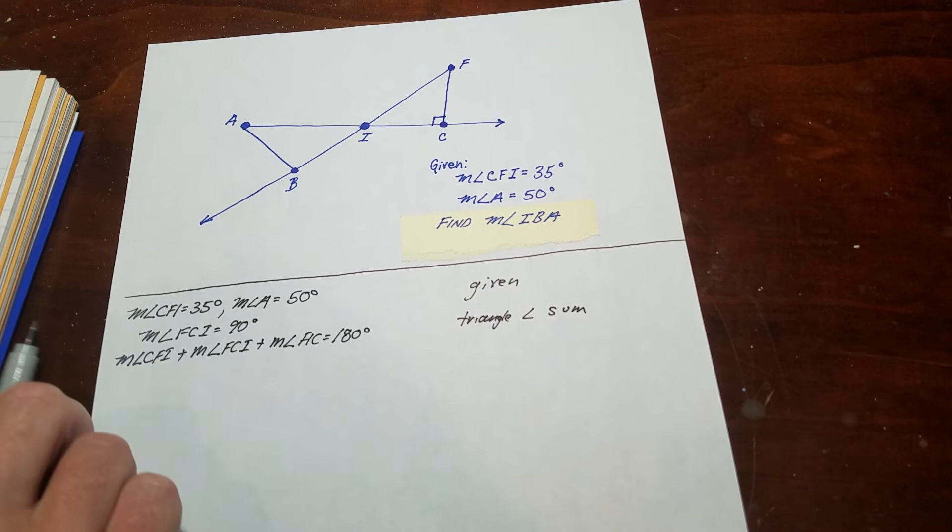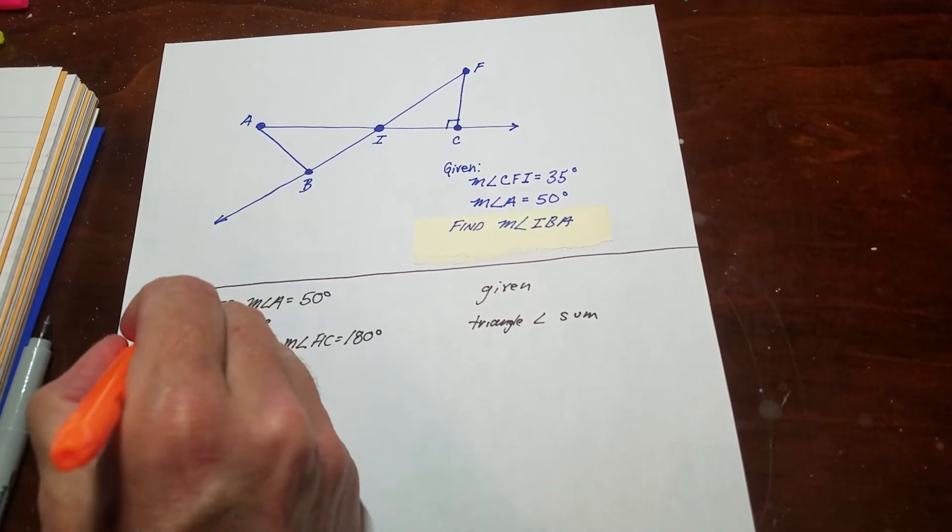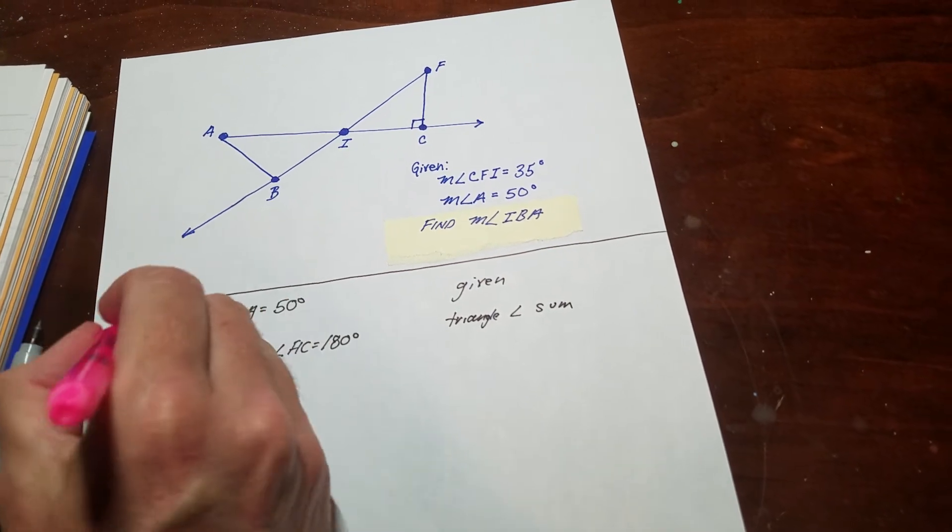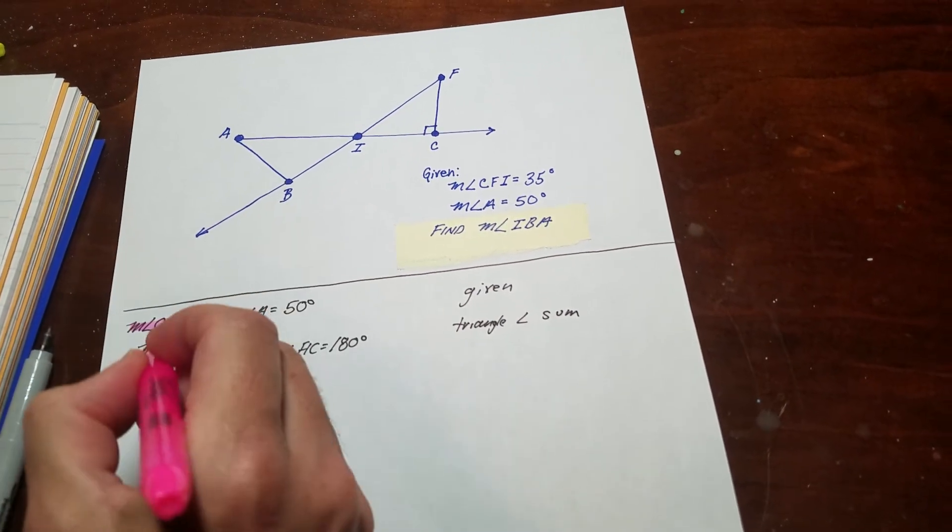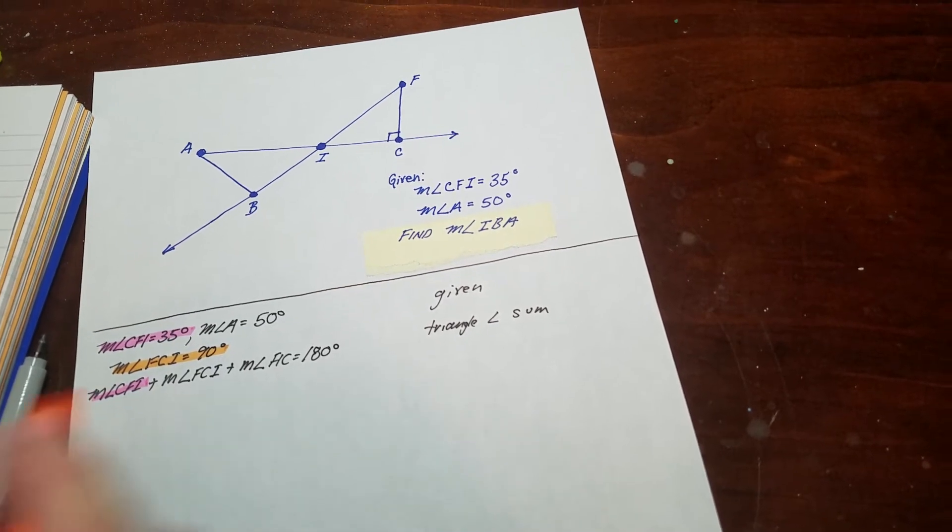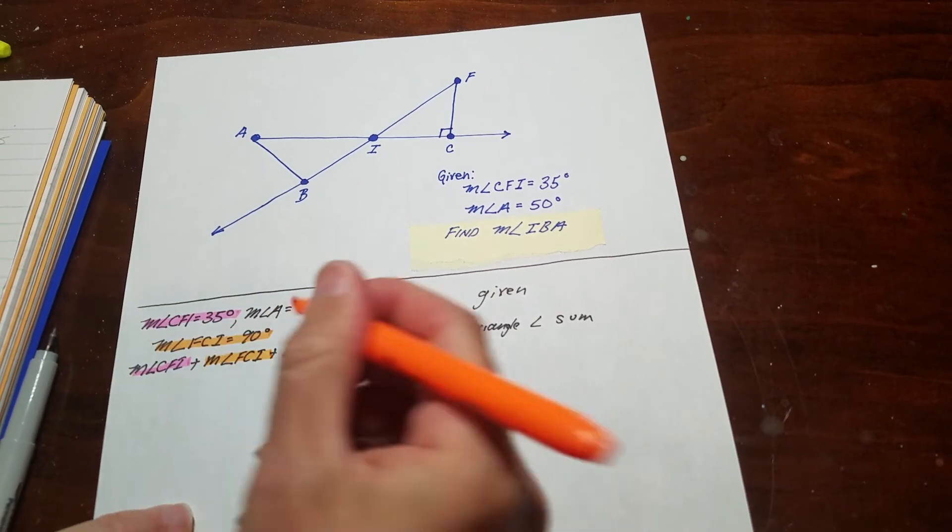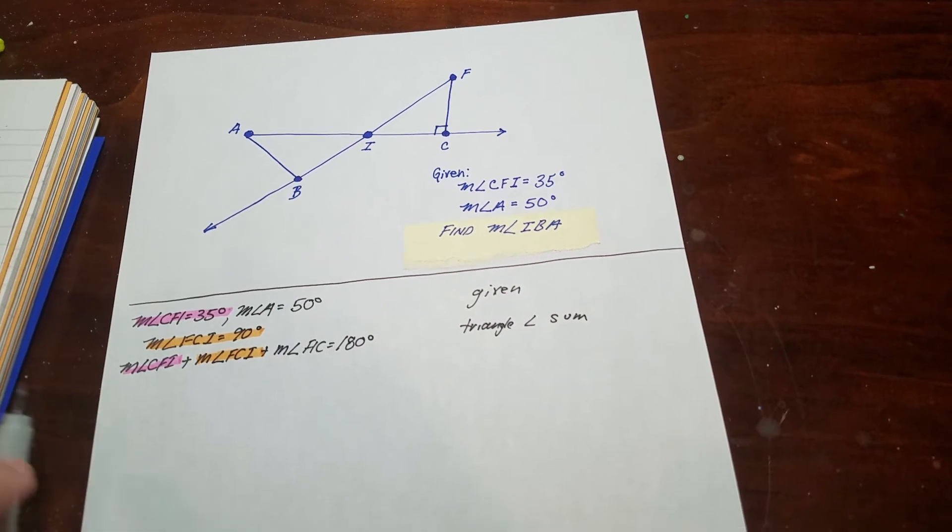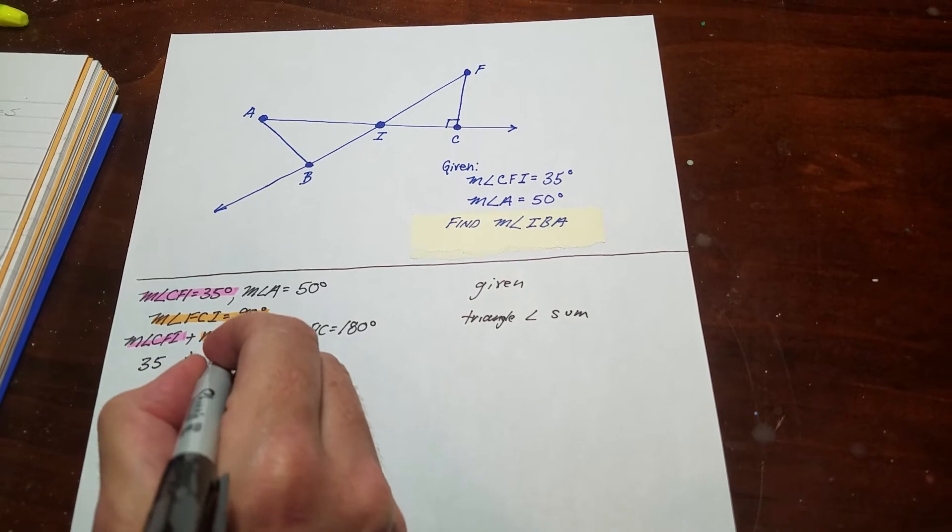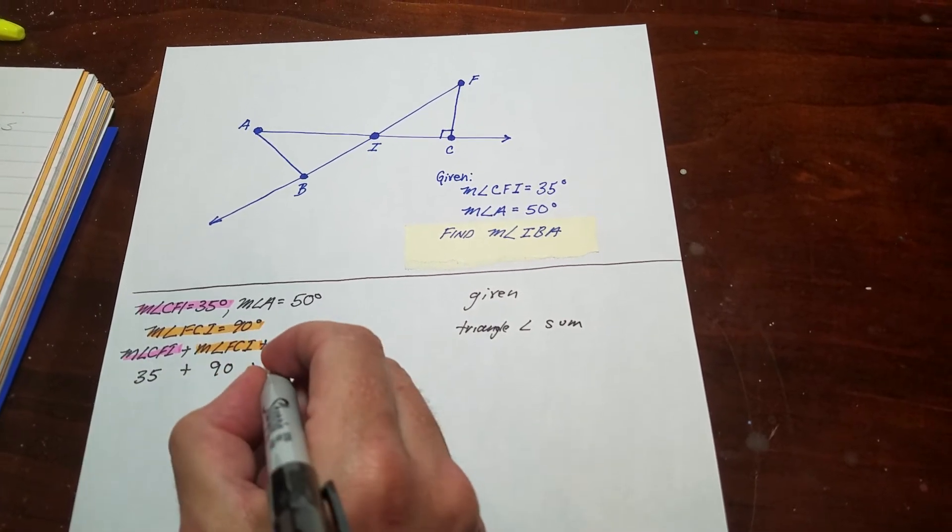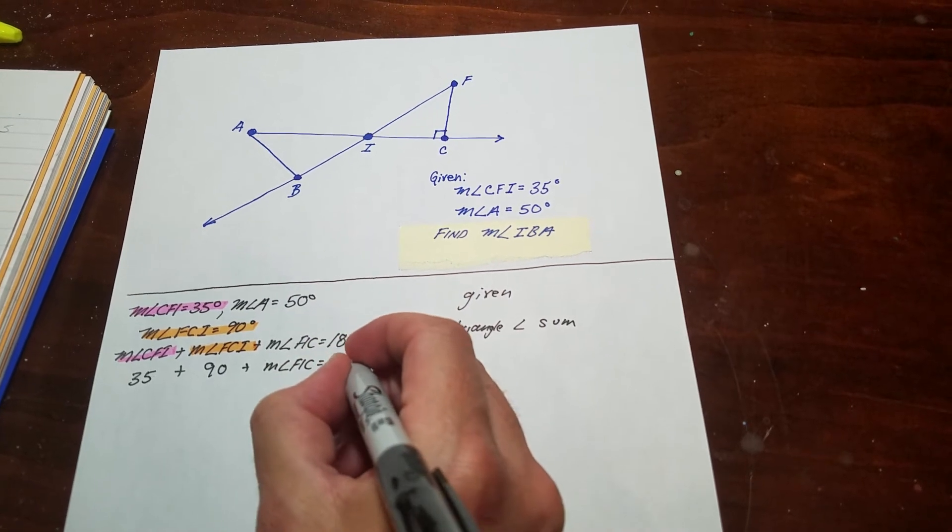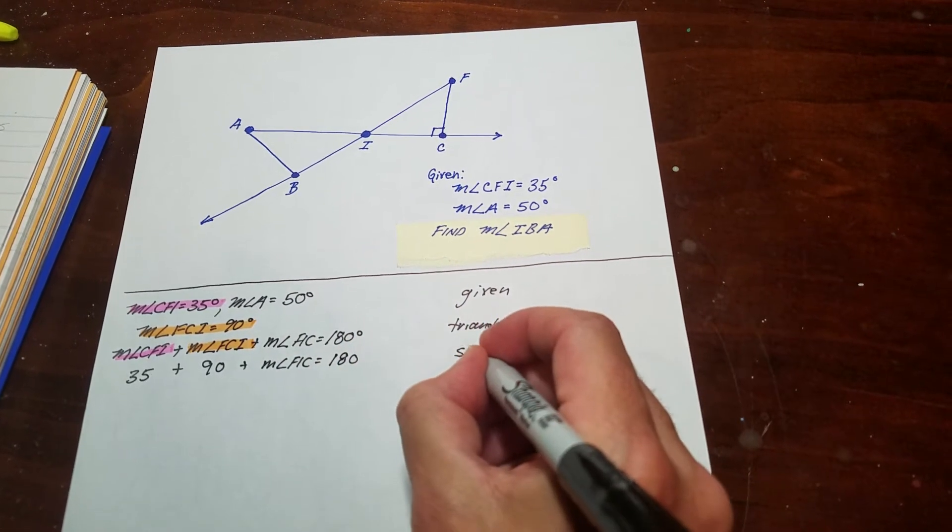Now I'm going to substitute. I know what these two angles are from the givens. I put 35 for CFI and 90 for FCI. That's just substitution.